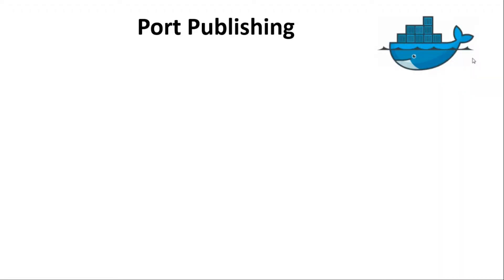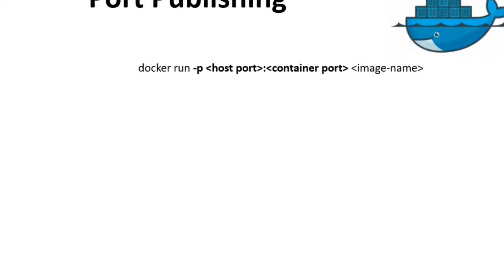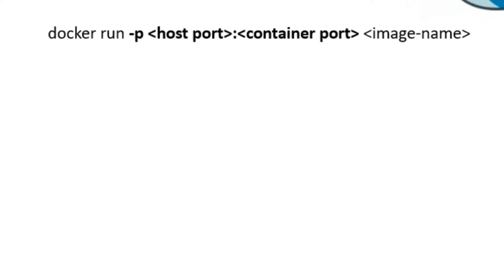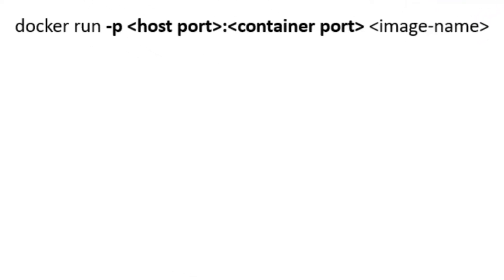In the last session we saw why we used IP 192.168.99.100 when accessing Docker containers running inside Docker Toolbox. In this session we will see why port mapping is required to access the Docker container from the outside world through the host machine IP and port. This is the command to run a Docker container from a Docker image, which contains the -p option.